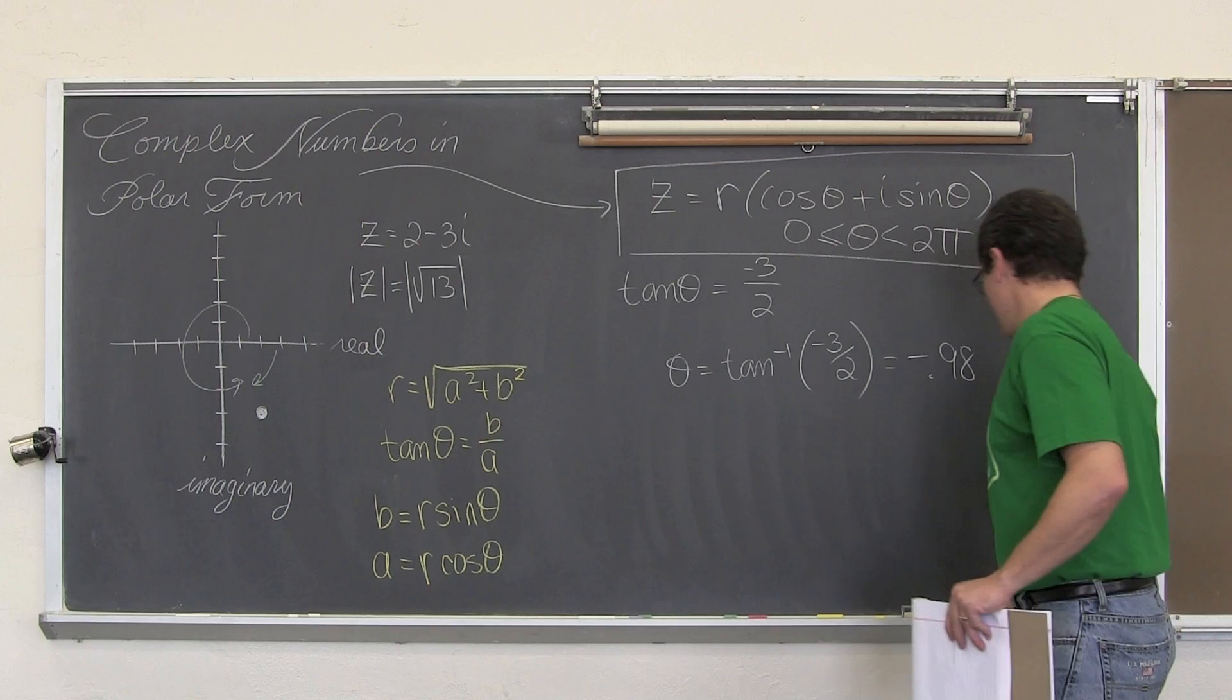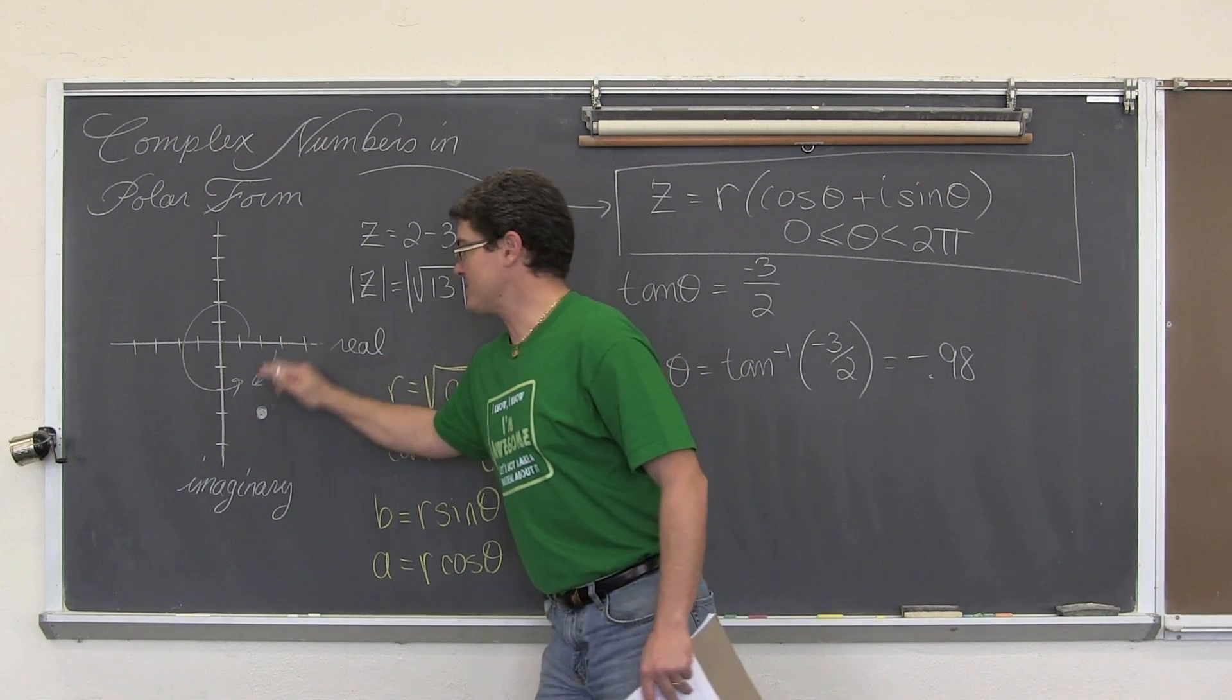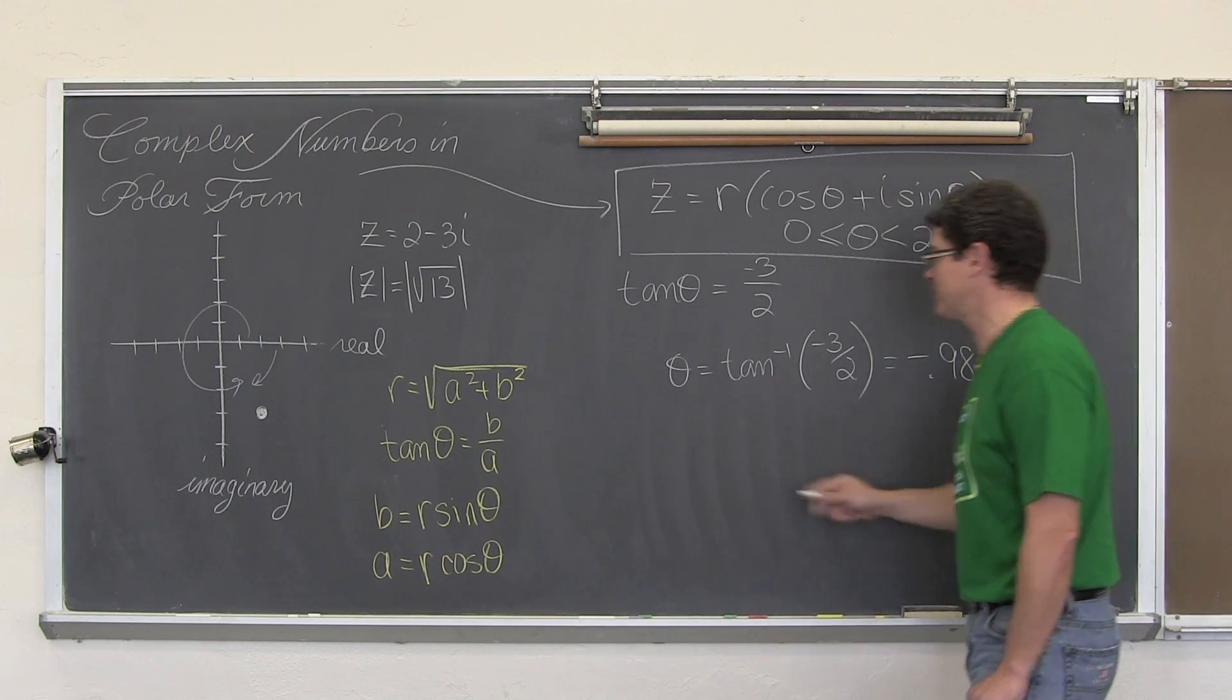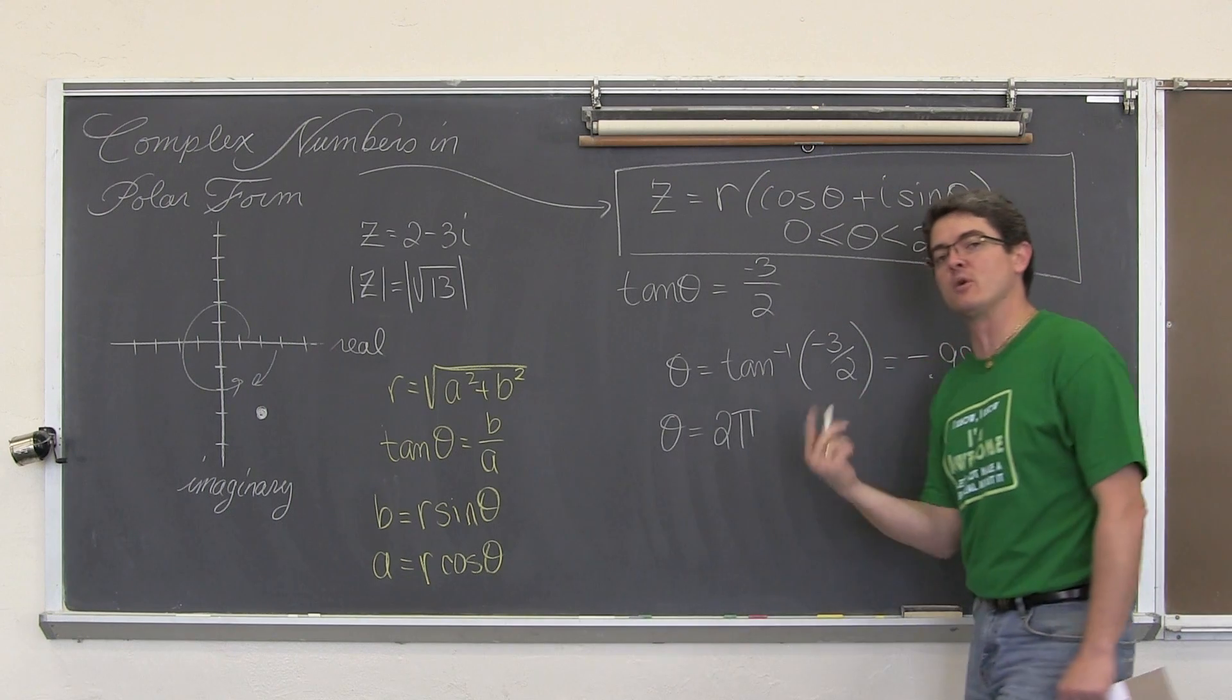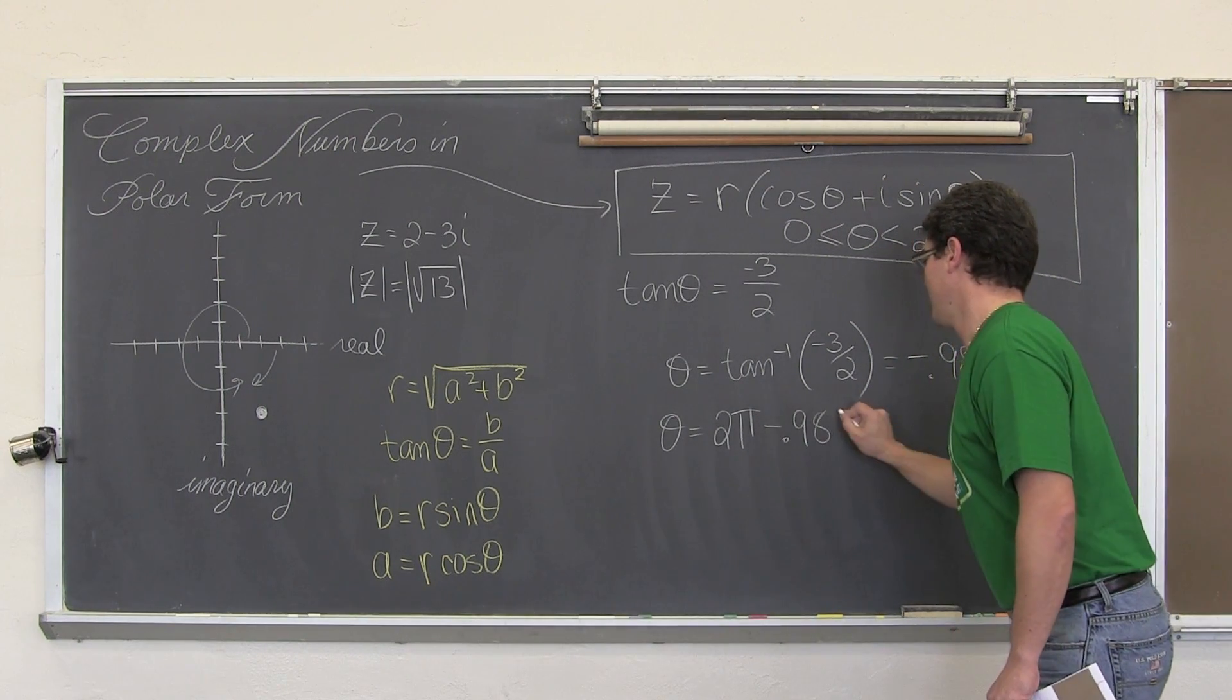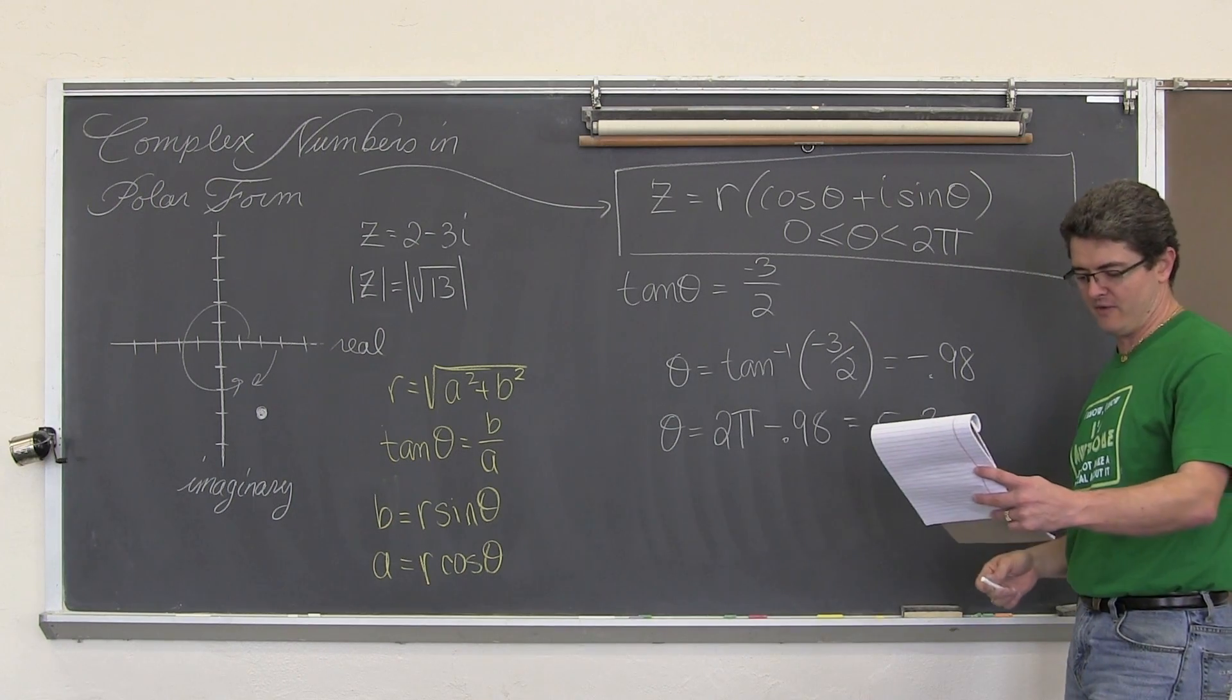So what I want to do is, since this is in quadrant 4, I want an angle that is in quadrant 4 that has the same reference angle of 0.98 radians. So theta is going to be 2 pi, or that one full rotation, 6.28, minus 0.98. And that comes out to be 5.3 radians.